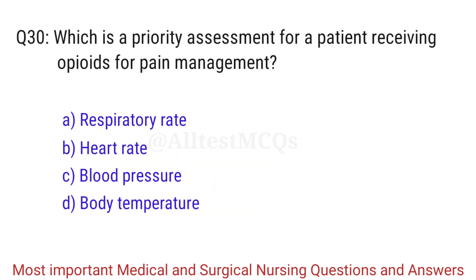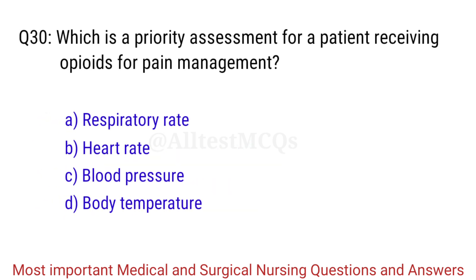Q30. Which is a priority assessment for a patient receiving opioids for pain management? The correct answer is Option A: Respiratory rate.